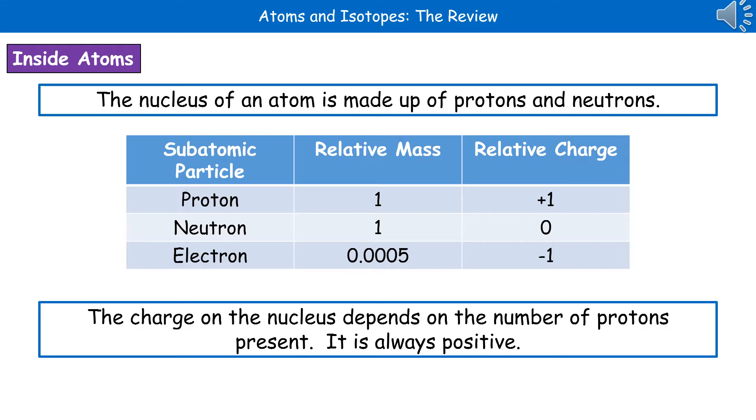So when we consider the three subatomic particles that make up an atom, we've got protons, neutrons and electrons. The relative mass of a proton and a neutron is 1 and the relative mass of an electron is 0.0005. The relative charge of a proton is plus 1, neutron 0, and an electron is minus 1. Make sure you do know that table because that always used to be an old favorite question.